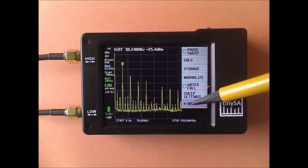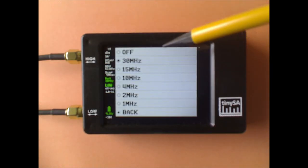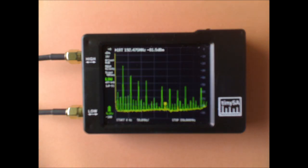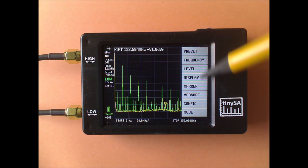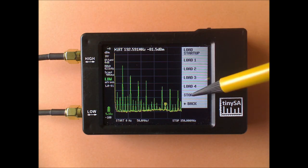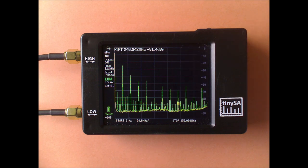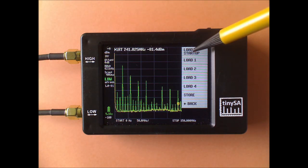So I can remove the output, switch it off, and now you see in green the stored trace. What I'm going to do is I'm going to store that in store location one.